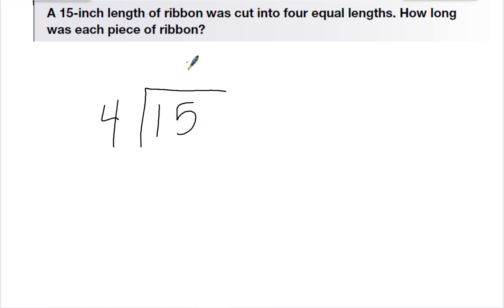4 goes into 15, 3 times. 4 times 3 is 12, subtract, 3 left over. Now up to now we've just written this as a remainder 3. But I can cut ribbon in smaller than an inch sections, because we have half an inch and 3 quarters and 1 fourth and everything. So instead I'm going to write this as a fraction remainder.